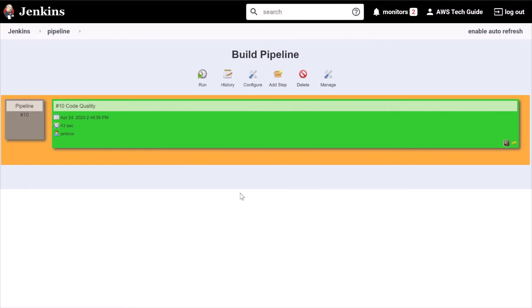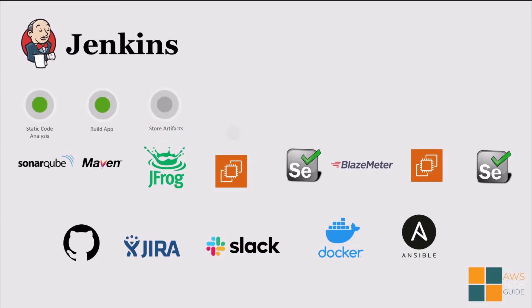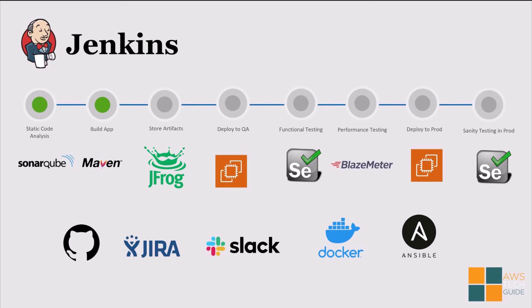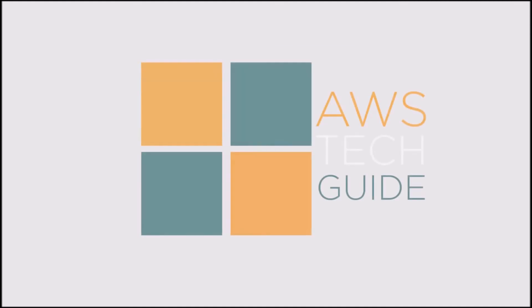Now in our next lectures, we will go to the next phases of our DevOps series, covering from static code analysis all the way to deploying in production and sanity testing in production. So in this lecture we have covered static code analysis and building your application with Maven. We have seen how to integrate SonarQube in Jenkins and how to configure Maven in a Jenkins job. Thank you for watching this tutorial and we'll see you in the next lecture.